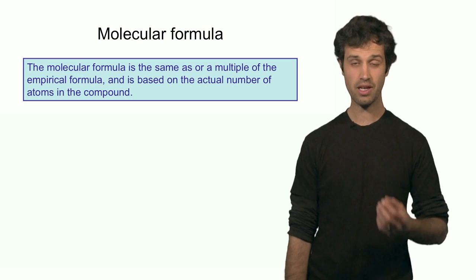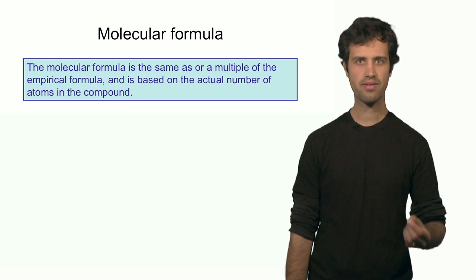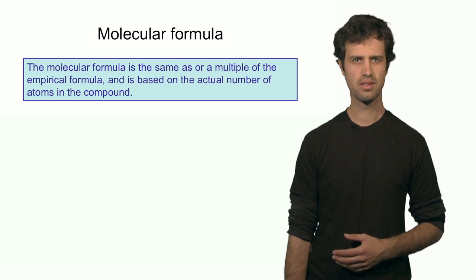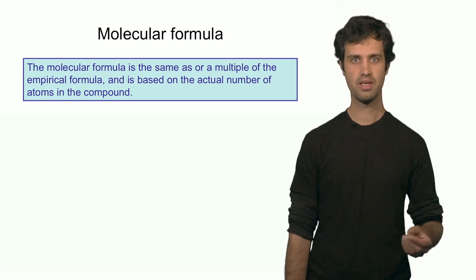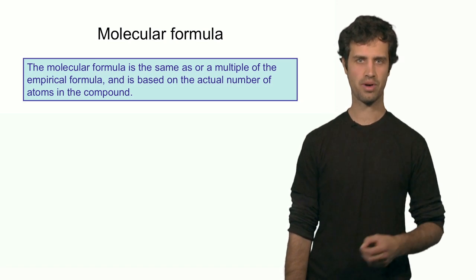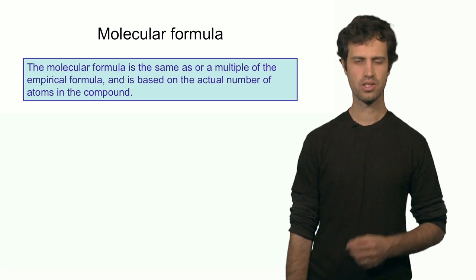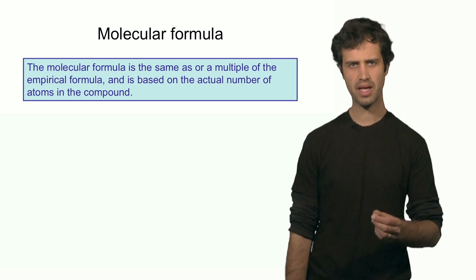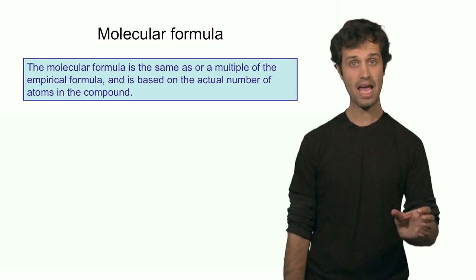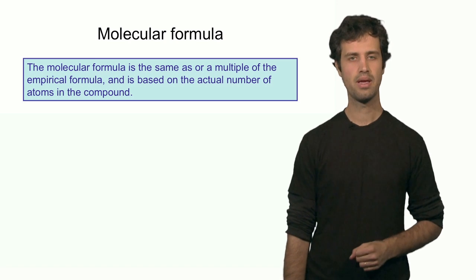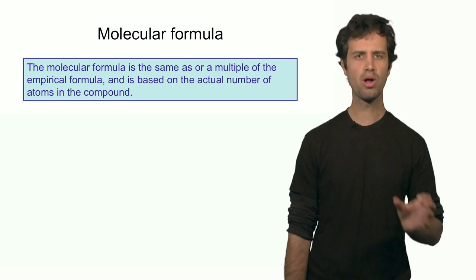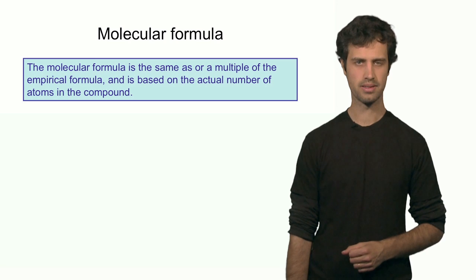The empirical formula tells you the relative number of atoms in a compound. The molecular formula, however, tells you the actual number of atoms in a compound. The empirical formula and the molecular formula are related — the molecular formula can be the same as the empirical formula or a multiple of the empirical formula.